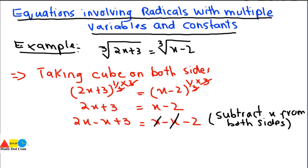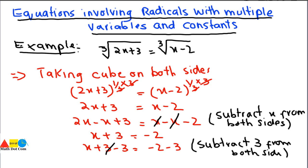So 2x - x gives us x, and we get x + 3 = -2. Now we subtract 3 from both sides to isolate x: x + 3 - 3 = -2 - 3, giving us x = -5. This is the solution of the given equation.